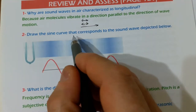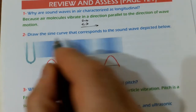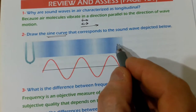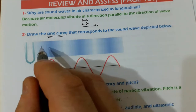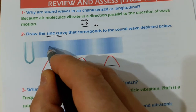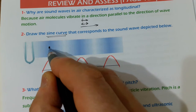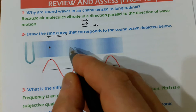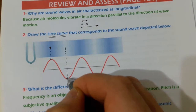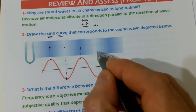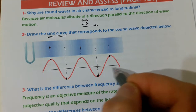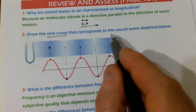Question number two: draw the sine curve that corresponds to the sound wave depicted below. The sine curve represents how pressure and/or density changes along the longitudinal wave. The region where compression occurs corresponds to a crest — the region of high pressure and high density. The region where density or pressure is lowest corresponds to a trough, which is the rarefaction. Another compression corresponds to a crest, another rarefaction to a trough.